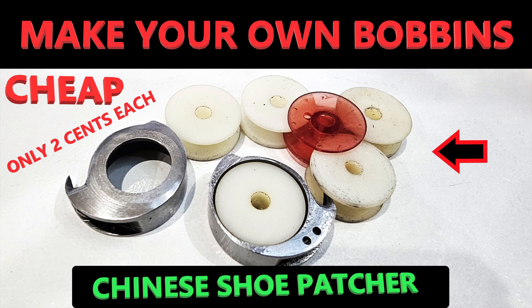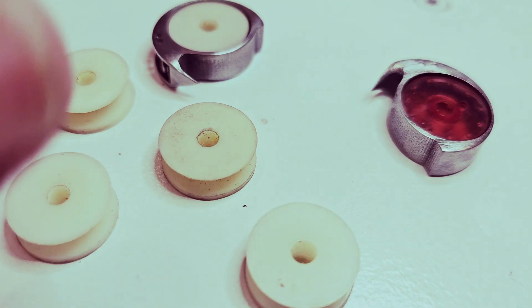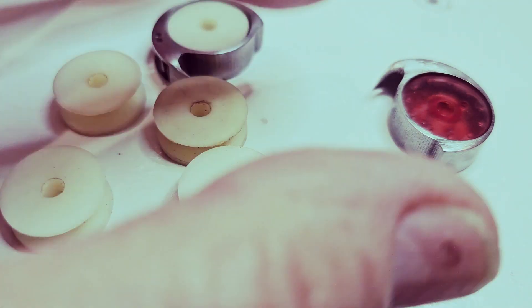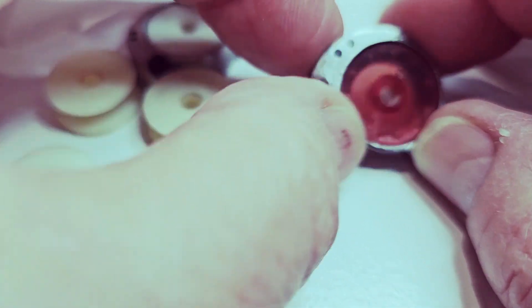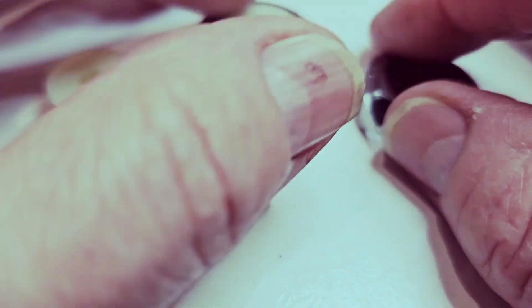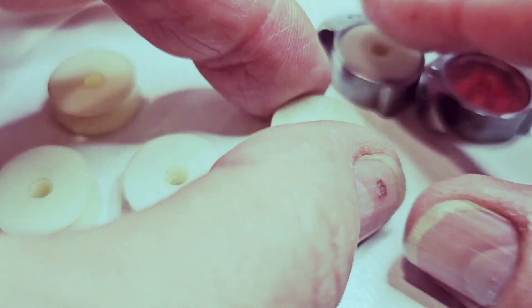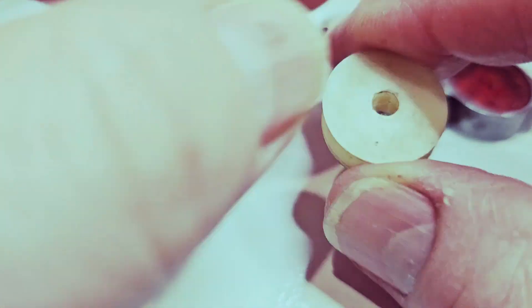Make your own Chinese shoe patch or bobbins for only two cents each. I needed more bobbins for my Chinese patch or shoe machine, so I made some. I 3D printed these.